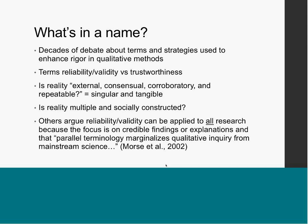Back to what's in a name: Janice Morse argues that we can use the terms reliability and validity in qualitative research because all research shares a focus on credible findings or explanations. She contends that if we create alternative terms like trustworthiness, this parallel terminology marginalizes qualitative inquiry from mainstream science — so you're no longer talking apples to apples.